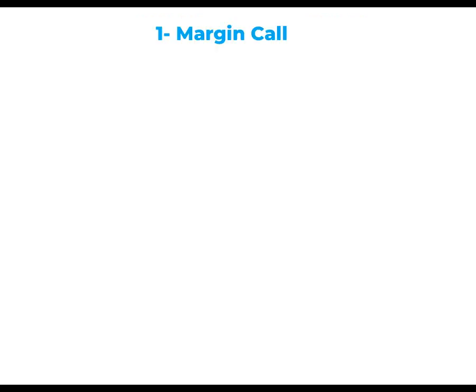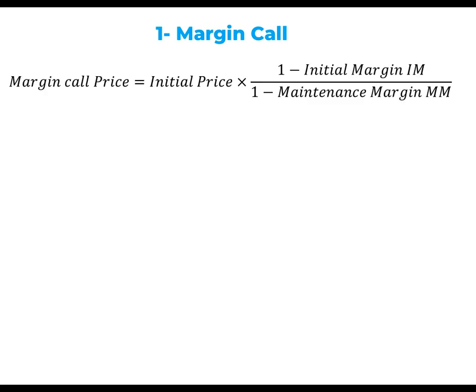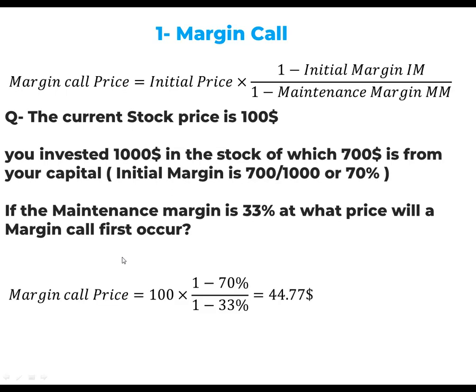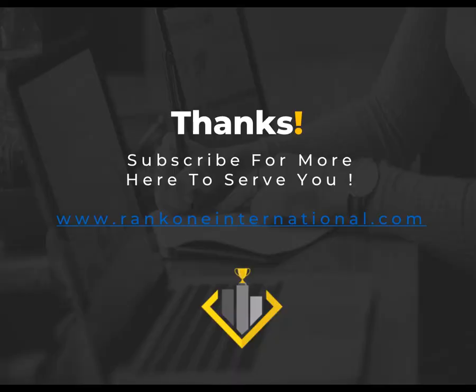One: margin call. The margin call price equals initial price times (1 minus initial margin) divided by (1 minus maintenance margin). Example: the current stock price is $100, you invested $1,000 in the stock, of which $700 is from your own capital. Initial margin is $700 divided by $1,000 = 70%. If the maintenance margin is 33%, the margin call price is $100 times (1 − 0.70) divided by (1 − 0.33) = $44.77.